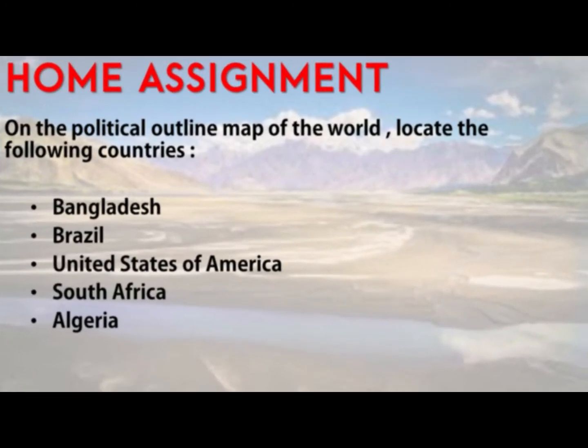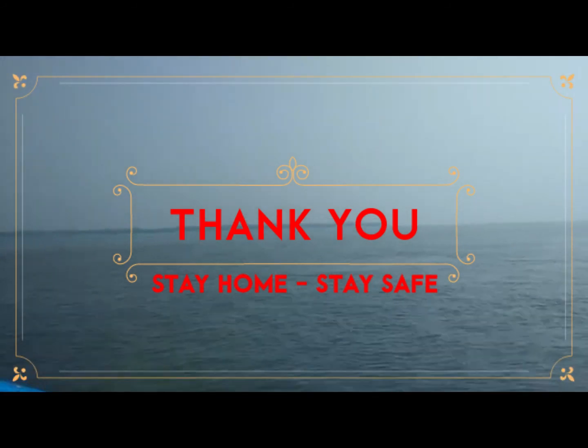Students, with the end of this topic, we have covered our chapter Land and the People. Now it's time for home assignment. On the political outline map of the world, locate the following countries: Bangladesh, Brazil, United States of America, South Africa, and Algeria. Do send your map book for checking to your geography teacher. Along with that, you will be solving a Google form given in this PDF file. Read the chapter carefully. Till then, take care, stay safe at home, happy learning.